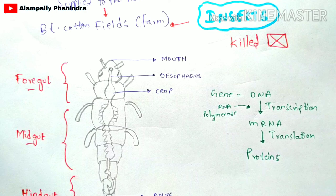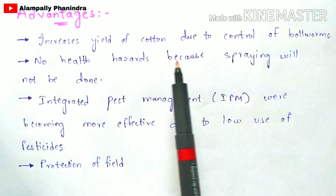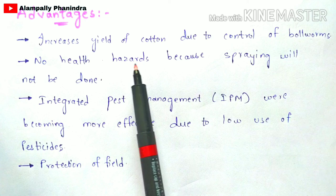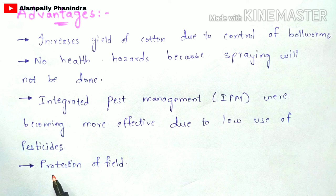The advantages of BT cotton are: it increases the yield of cotton due to control of boll worms; there are no health hazards, as the insecticide is not sprayed externally from the environment; integrated pest management (IPM) becomes more effective due to low use of pesticides; and it provides protection of the field due to Bacillus thuringiensis.